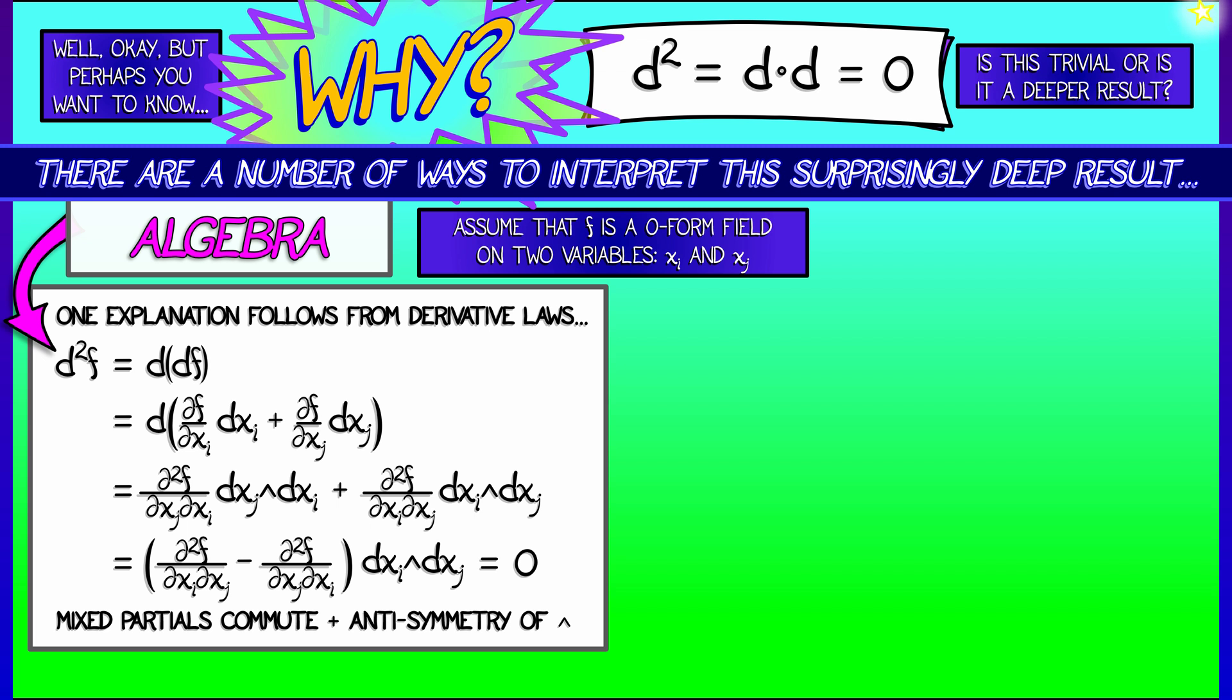Okay, that's an algebraic explanation for why d squared equals zero, assuming that you apply induction and get this for higher forms. But is there another way to think about it?